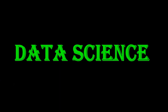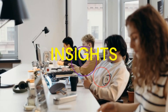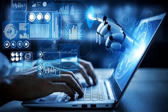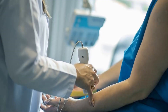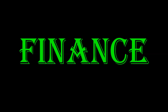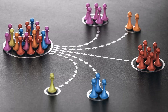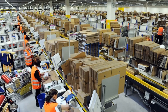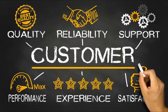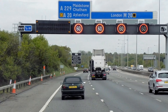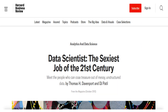In essence, data science helps organizations make better decisions by turning raw data into insights. It is used across various industries: healthcare for predicting patient outcomes, disease trends, and optimizing treatments; finance for fraud detection, risk management, and investment strategy; retail for customer segmentation, demand forecasting, and inventory management; marketing for personalizing experiences and optimizing campaigns; and transportation for route optimization, traffic management, and predictive maintenance. Thomas H. Davenport and D.J. Patil from Harvard Business Review published an article claiming data science to be the sexiest job of the 21st century.